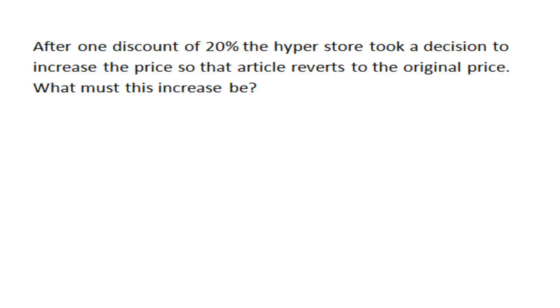So if we take the price of the article to be X, then after one discount means it was 0.8, multiplied by 0.8 which is 20%, and then we want to multiply this so that it reverts to its original price. So we are going to multiply it by a certain value P which will revert to X.